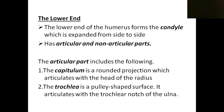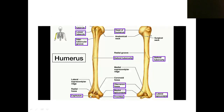The lower end of the humerus forms the condyles, expanded from side to side. The condyles have articular and non-articular parts. The articular parts are the capitulum and trochlea. The capitulum is a rounded, barrel-shaped projection that articulates with the head of the radius, and the trochlea articulates with the ulna.